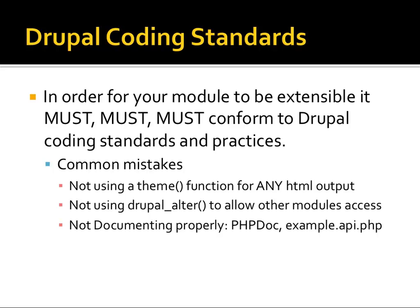Some common mistakes: not using a theme function for HTML output. If you're writing something that's going to spit out HTML, it should go through a theme function. You shouldn't be hard-coding HTML into a regular function, because a developer that comes along behind you and tries to use your API might want to use a fluid grid with divs instead of tables. They can't do that if you've hard-coded it. It needs to be in a theme function where they can override it. Don't hard-code HTML into your module unless it's in a theme function or a TPL file.